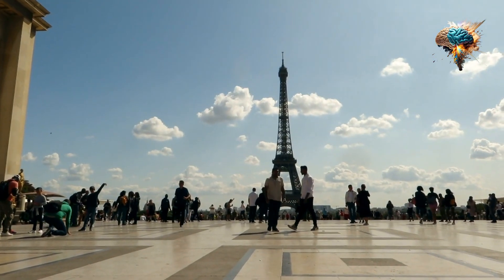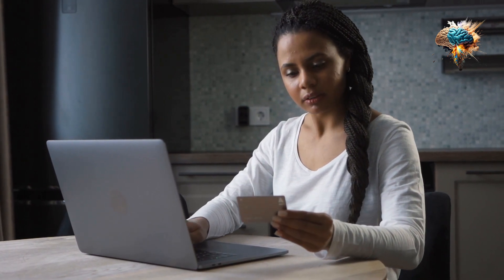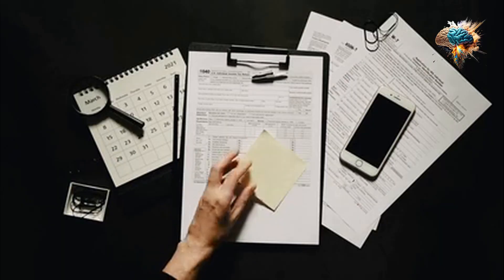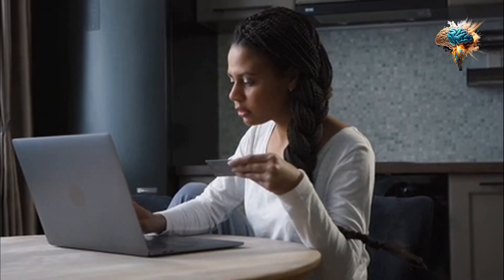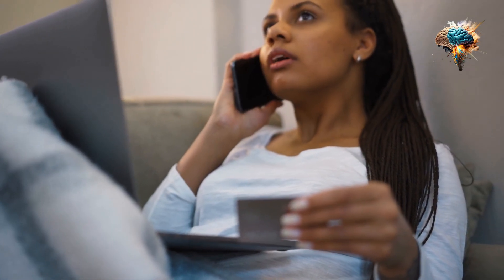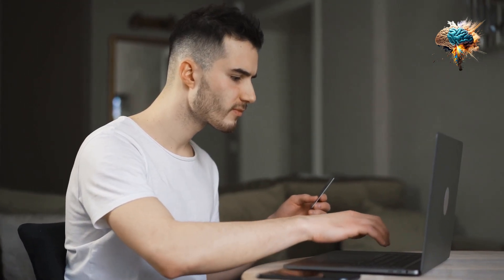Once you have a clear picture of your expenses, it's time to evaluate your spending habits. Take a close look at where you're spending the most money and ask yourself if those expenses align with your values and goals. Are you spending too much on dining out or entertainment? Are there any subscriptions or services you can live without? By identifying areas where you can cut back, you'll be able to allocate your resources more effectively and save for the things that truly matter to you.